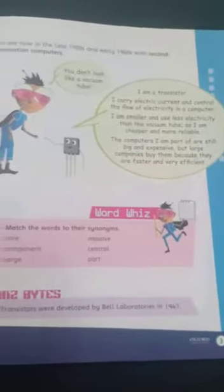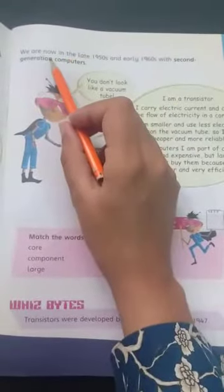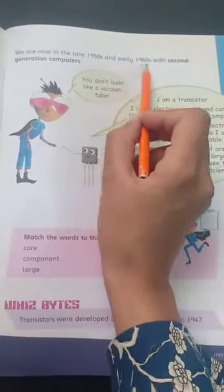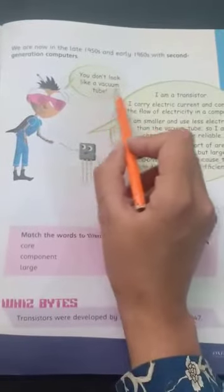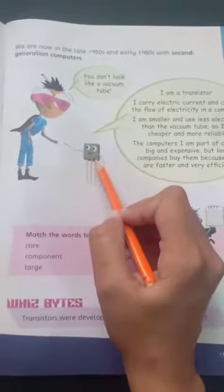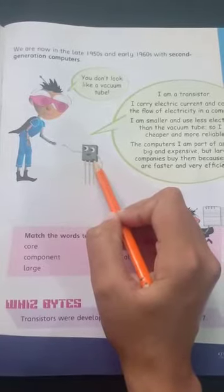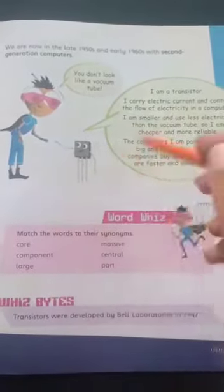Students, now we are on page 3 and we will talk about second generation computers. We are now in the late 1950s and early 1960s with second generation computers. You don't look like a vacuum tube. This picture is not similar to what we saw on the last page. That was a vacuum tube. Now, what is this?